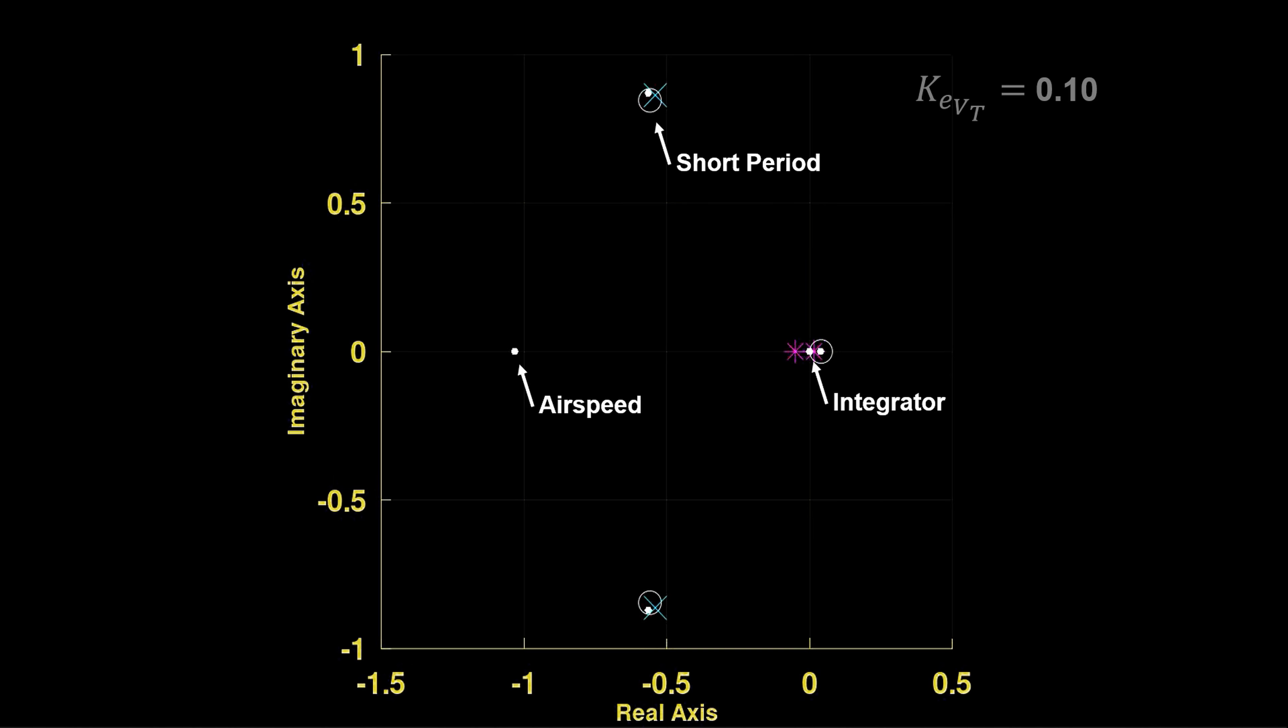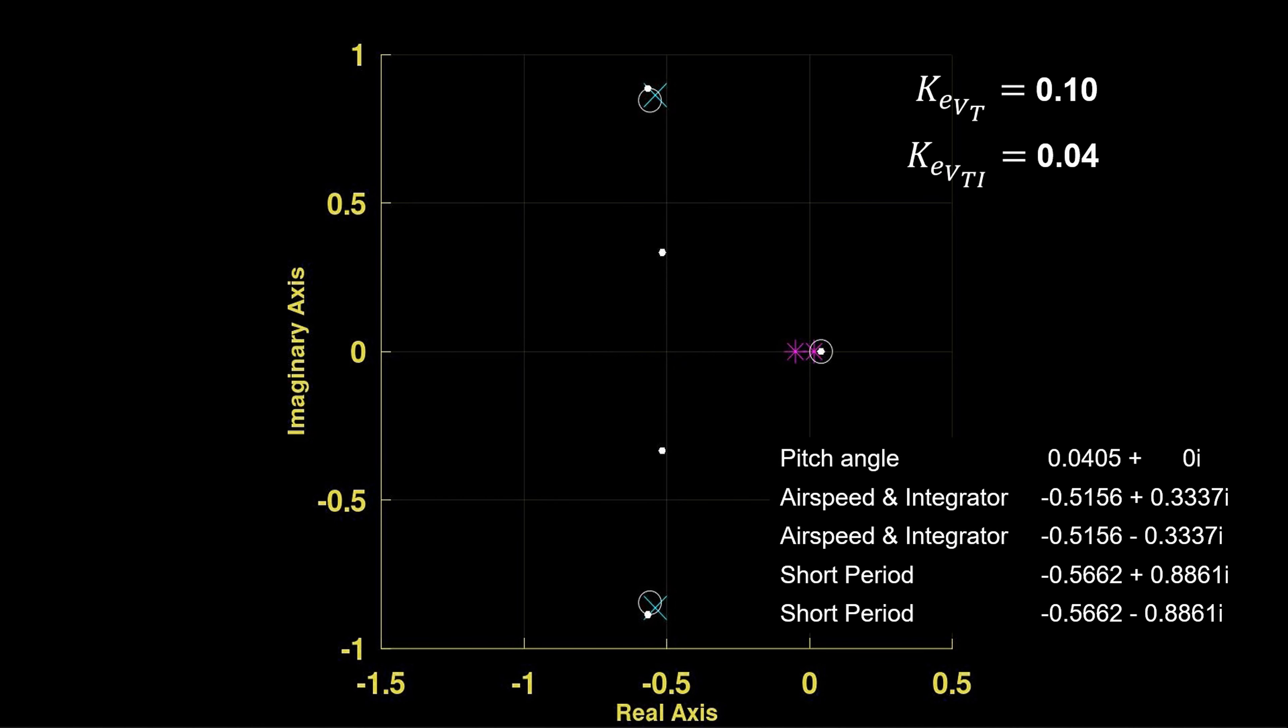And now we vary the integral air gain. Observe the effect. They approach each other on the real axis, and then split near minus 0.5. Here's a hypothetical tune controller, which is by no means optimized, but something that we'll use going forward as we add more fidelity in the feedback loop.